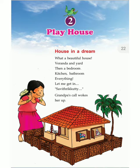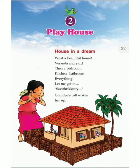This is the first page of the second chapter. What can you see in the picture? There is a girl, there is a house, there are two trees. The name of the girl is Savitrikuti, and you can see a beautiful house and two coconut trees. This chapter's name is Playhouse. It says: house in a dream — what a beautiful house! Veranda and yard, then a bedroom, kitchen, bathroom, everything. Let me get in.